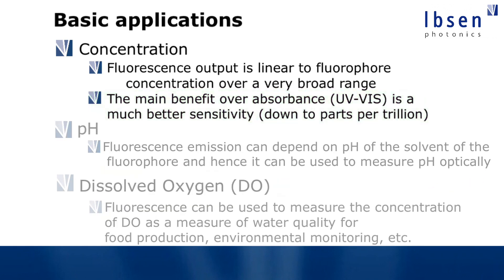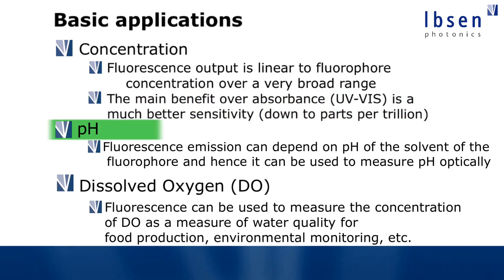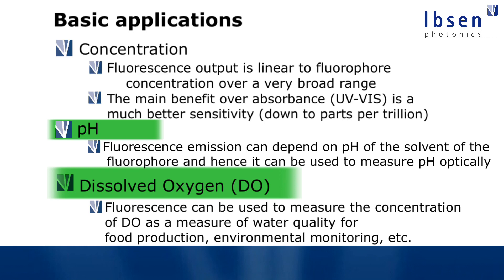Something that's used quite a lot is to measure pH or dissolved oxygen. This is because the pH and the amount of oxygen in a solvent can actually affect the amount of fluorescence. So this is a way to look at the amount of fluorescence and then indirectly measure the pH of the solvent.